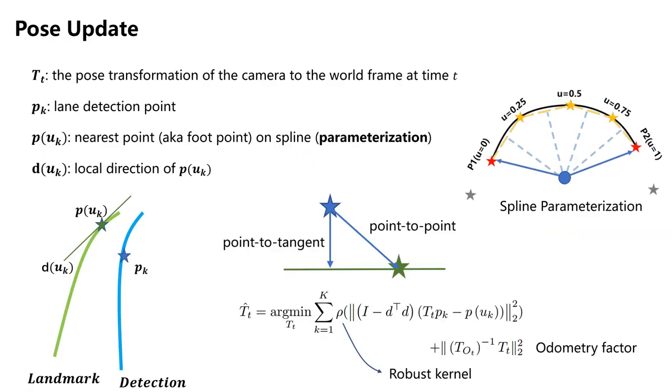Once we have established the data associations between the current observations and the lane markings in the map, we proceed with the pose update. Firstly, we approximate the spline with line segments to obtain a parameter U. This allows us to determine which point on the spline corresponds to a point P on the observed lane marking. Next, we establish the residual between two points using the point-to-tangent approach. The optimized pose is obtained by minimizing this residual as well as the residual between the estimated pose and the odometry-based pose.